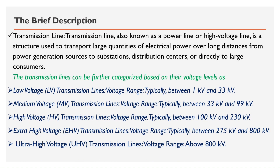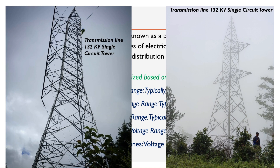Transmission line: also known as a power line or high-voltage transmission line, it is a structure used to transmit large quantities of electrical power over long distances from power generation sources to substations, distribution centers, or directly to large consumers. Transmission lines are categorized by voltage level: low voltage (1 kV–33 kV), medium voltage (33 kV–99 kV), high voltage (100 kV–230 kV), and extra high voltage (above 230 kV).